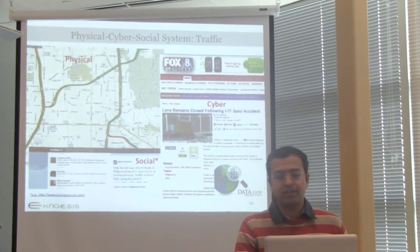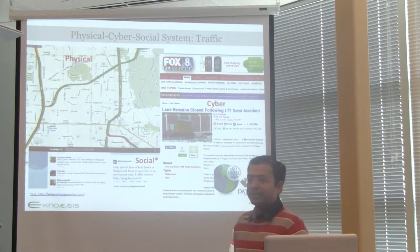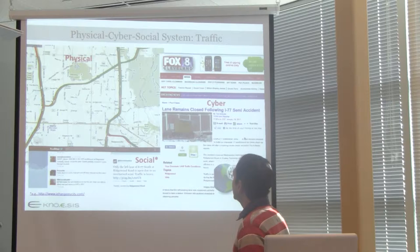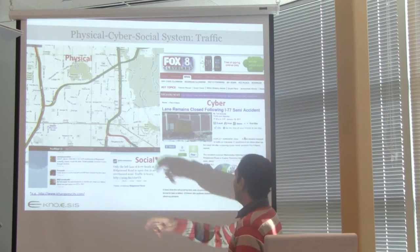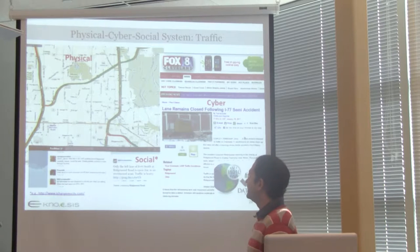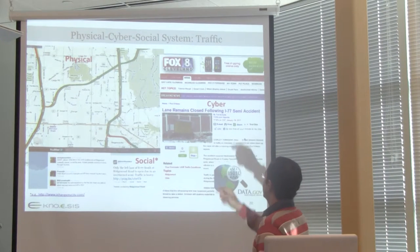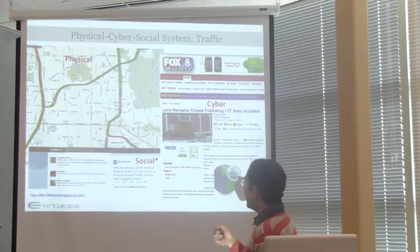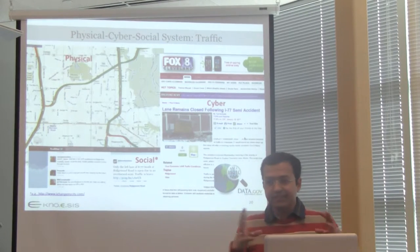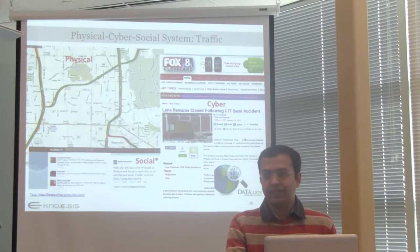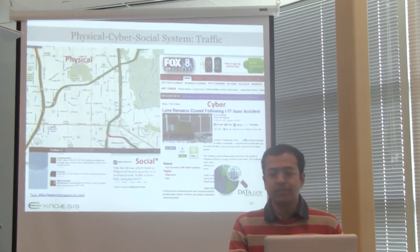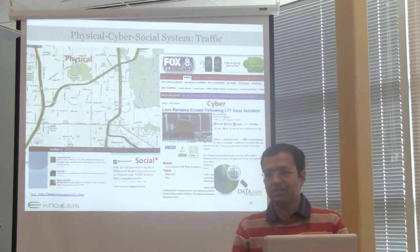I'll tell you why traffic analytics is a PCS system. We have a physical world — for example, a map, which is a representation of a physical world. Then you have sensors monitoring the physical world; you can see red markings on the map showing slow-moving traffic. It turns out there was an accident at that location, which was being reported from a news agency. You also have the same incident reported on social media. You can see how three things come together in this example. Given the value of textual events in PCS systems, I'll give you an extraction mechanism for traffic events from textual streams.